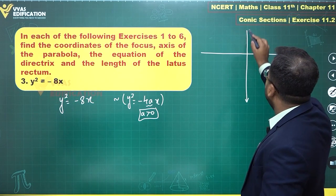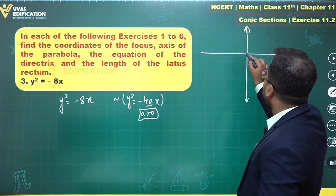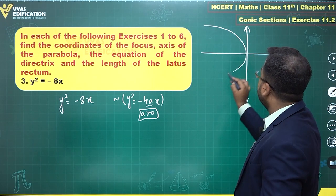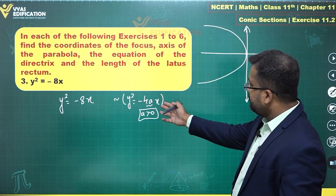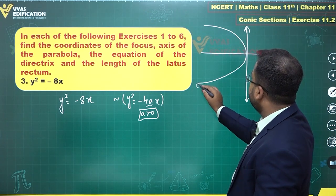What we have is a leftward opening parabola. This will be a leftward opening parabola in this manner. So y² = -8x, or y² = -4ax for this particular parabola.